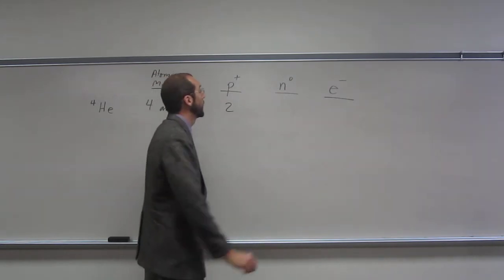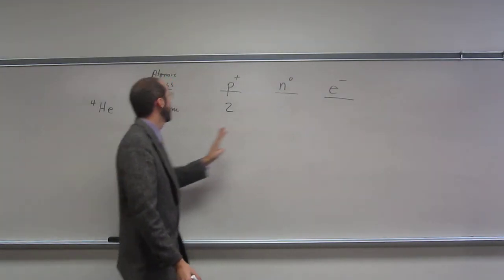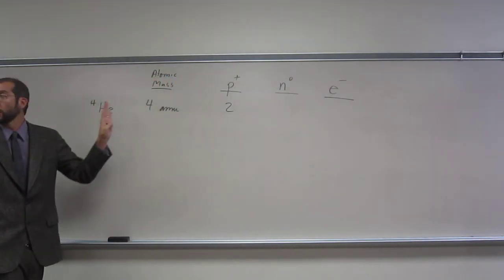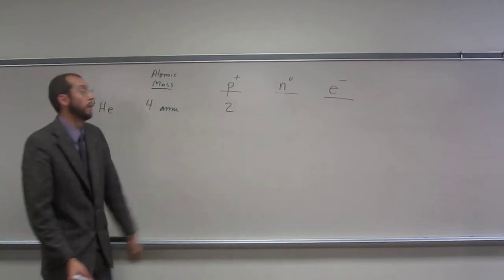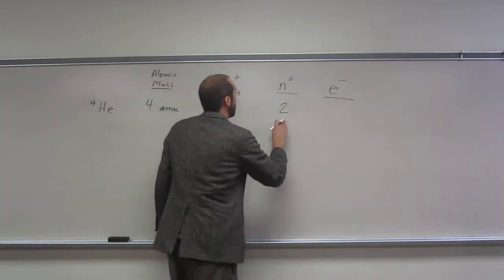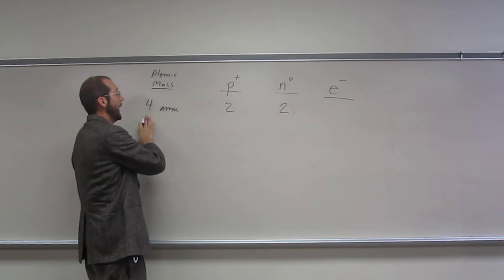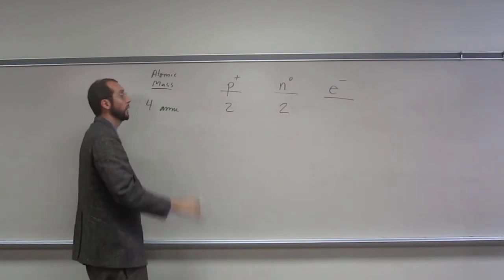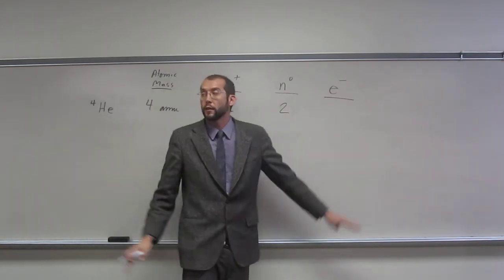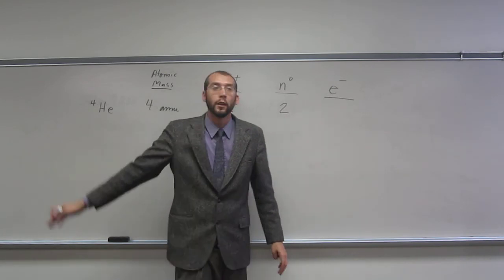Looked at the atomic number. The number of neutrons in this particular atom is going to be what? 2. 2 as well, because this number and this number have to add up to equal this number, okay? And the number of electrons, since this is a neutral atom, is also 2.